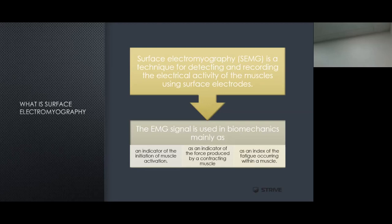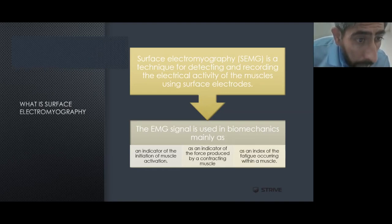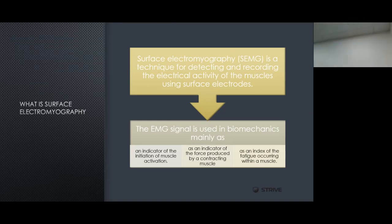Surface electromyography, or EMG, is a technique for detecting and recording the electrical activity of muscles using surface electrodes. This is done in a clinical setting where electrodes are placed on the surface of the skin to detect and measure muscle activity or muscular output. The EMG signal is used mainly in biomechanics as an indicator of the initiation of muscle activation — we want to identify when the muscle is being activated, how long it's activated, and whether it's activated at all.